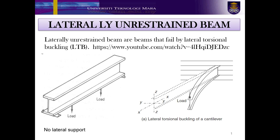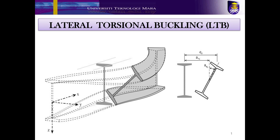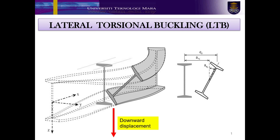Previously, I explained the behaviour of laterally restrained beams. Now let's talk about the failure behaviour of the laterally unrestrained beam. An unrestrained beam is susceptible to lateral torsional buckling. Lateral torsional buckling (LTB) is the combined lateral deflection and twisting of an unrestrained member subject to bending about its major axis, as shown in the next figure. The picture shows the LTB buckling phenomenon in an unrestrained beam — we can see that the beam not only involves downwards displacement, but also lateral sideways displacement and torsional motion, or twisting.